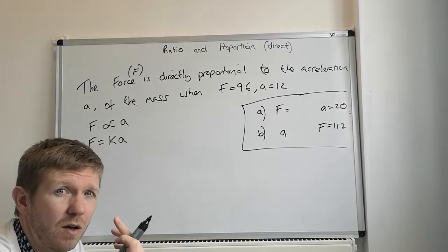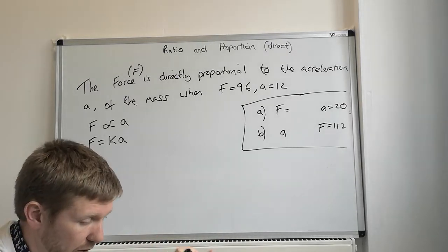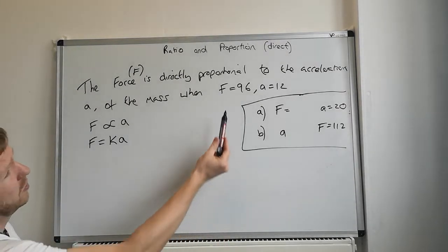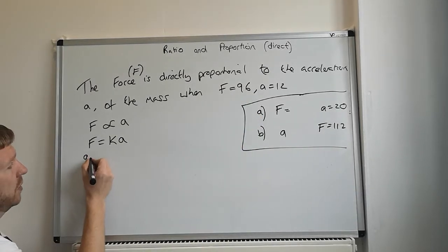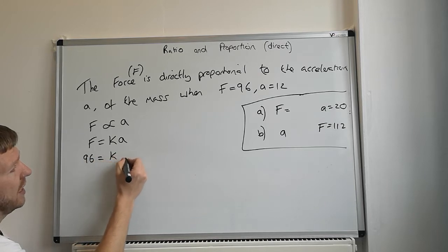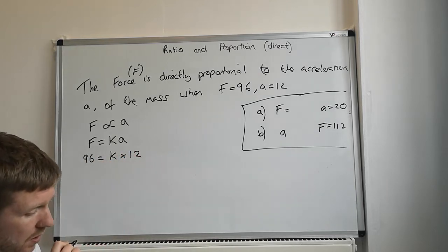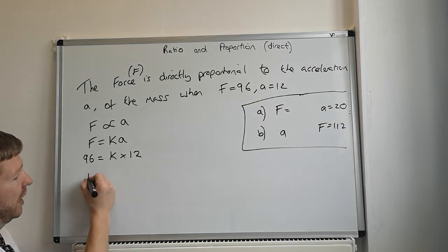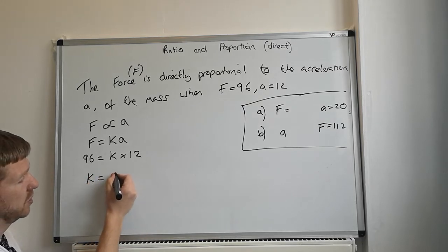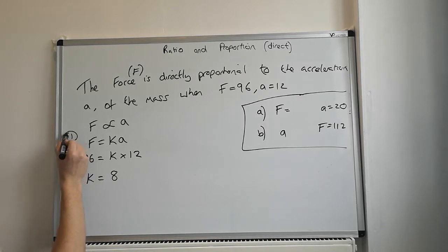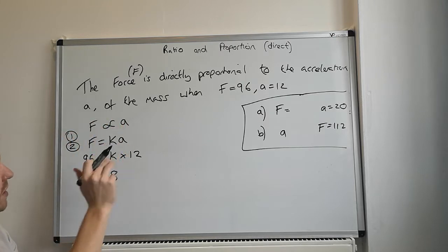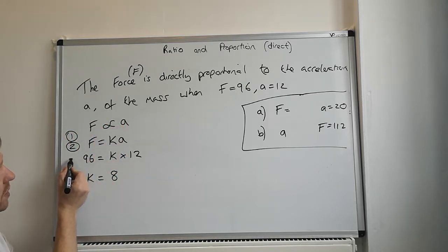Go back to the example just a minute ago, five pounds an hour, that's what we're multiplying by. And then we substitute the numbers given. So we've got F equals 96 and a equals 12. So 96 is equal to k times 12. And therefore we can work out what k is, k is equal to 8. So steps, you're definitely going to need to do this step two. Step one, if you write that, great. Step two is really important, substitute the numbers in. Step three, work out what k is.